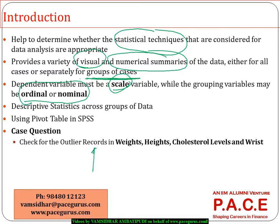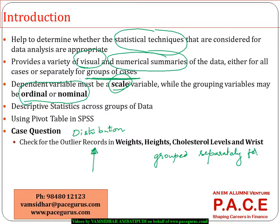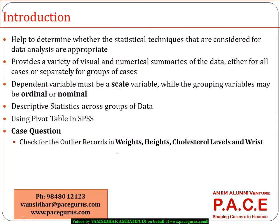From that standpoint I am creating a small case question: check out for the outlier records or check out for the distribution of the data in weights, heights, and cholesterol — all these things grouped separately for male and female. If that is the kind of objective I have, I can very well resort to the exploratory data analysis, grouped by male and female separately or grouped by smoking status separately.